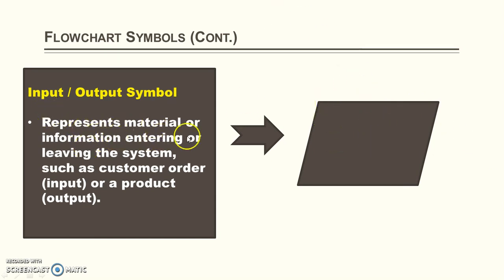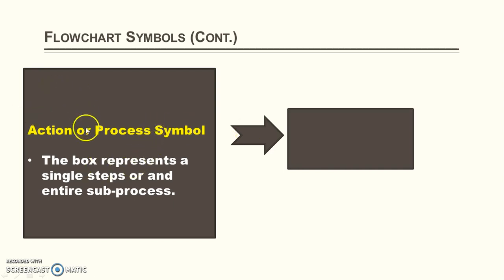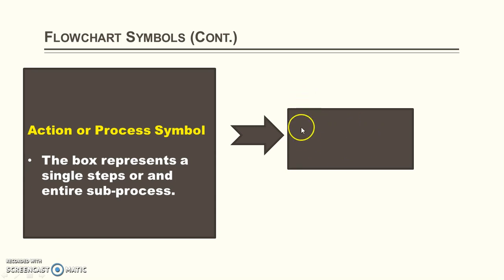Consider one example — the product management system, in which the customer order is the input and the product we receive is the output; that can be represented using the parallelogram symbol. Next, we will discuss about the process symbol. Based on some input, there are some steps that should be executed — that is known as the process, represented using a rectangle symbol. The box represents a single step as well as an entire sub-process. For example, adding two numbers: c equals a plus b is a single step represented using a rectangle. Swapping two numbers using a third variable — c equals a, a equals b, and b equals c — is an entire sub-process represented using this rectangle.